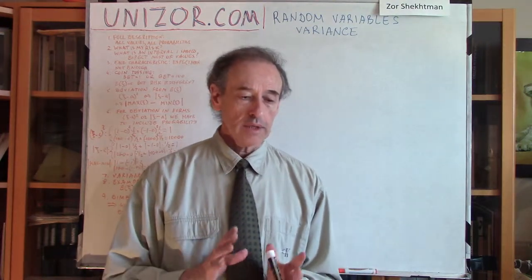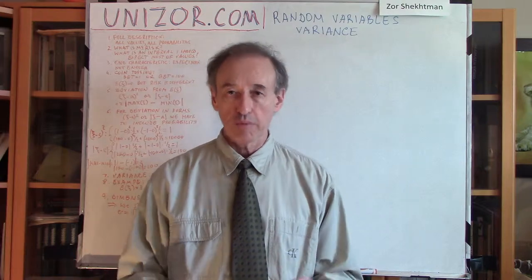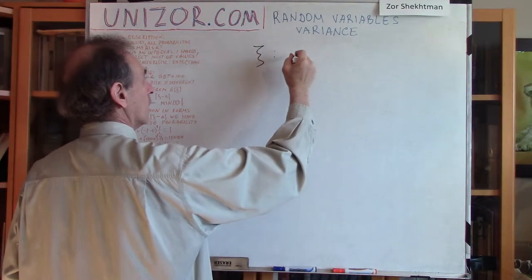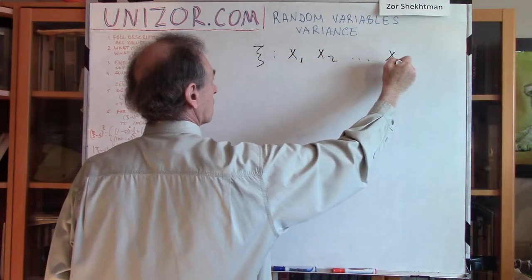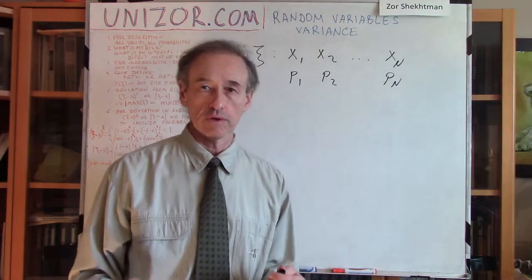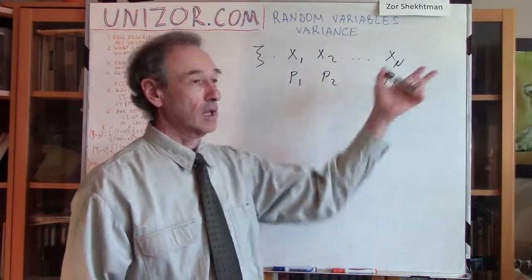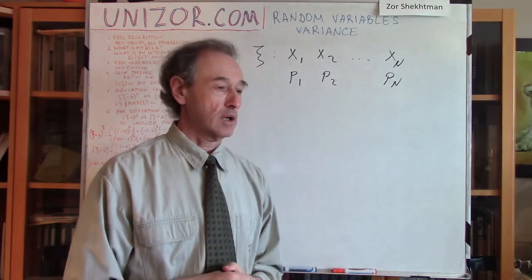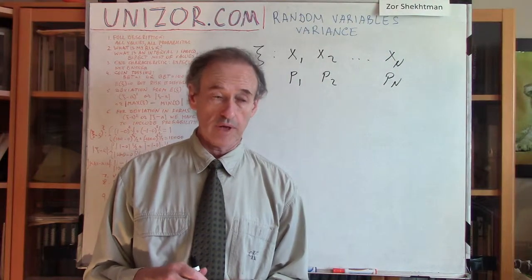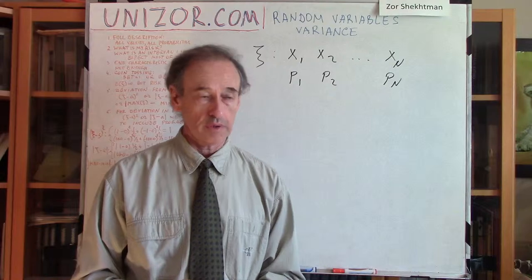Random variables. Let me first remind you that we are talking about random variables which take a certain finite number of values with certain probabilities. Generally speaking, we are talking about a random variable — I use the Greek letter C — which has a finite number of real values, each with certain probabilities.